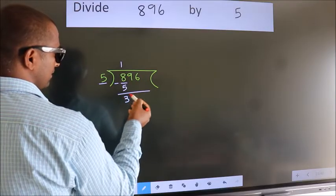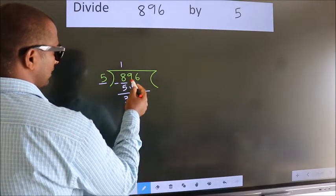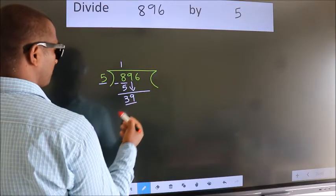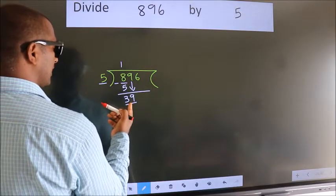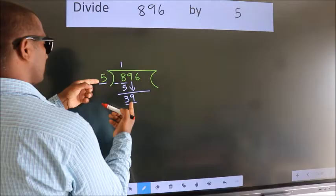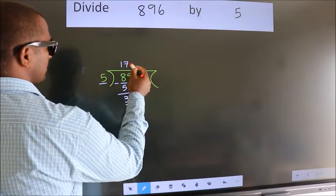After this, bring down the beside number. So, 9 down, making 39. A number close to 39 in the 5 table is 5 sevens 35.